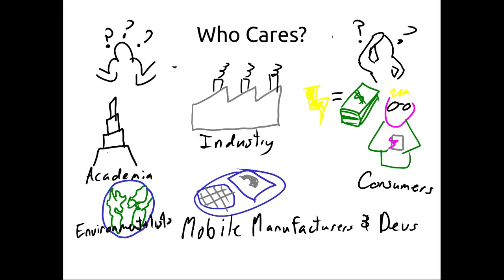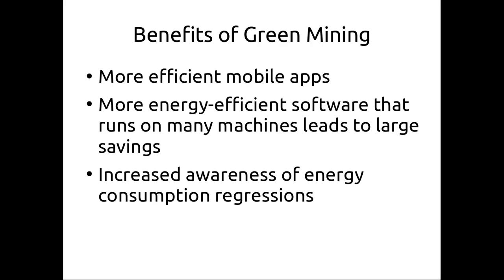Who cares about extracting the energy profiles of a software application? Industry cares because they pay for data centers to run cloud machines and servers. They also manufacture mobile devices, and an efficient mobile device attracts consumers who want long battery life. Furthermore, reduction in resource usage is a sustainable practice, enabling us to either use less or do more with the same amount. Green mining can enable more efficient mobile apps and help produce energy-efficient software — like Mozilla Firefox — leading to large savings, and increases awareness of energy consumption regressions.